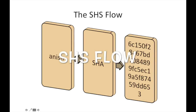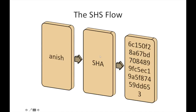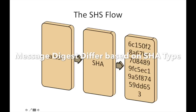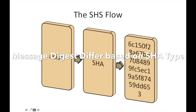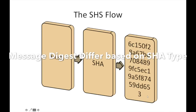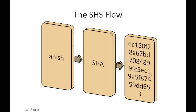The typical SHA flow is: given a clear text and an algorithm, it will produce a message digest. For example, given a clear text with a name, we input it to the one-way hash function SHA, and it produces a message digest. The message digest size varies based on the algorithm chosen. In the case of SHA-1, with a 512-bit block, the message digest will be 160 bits.